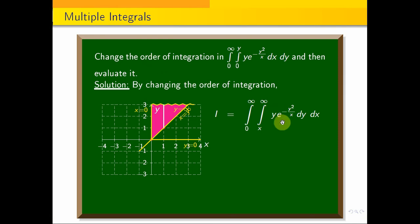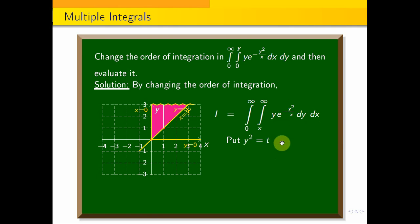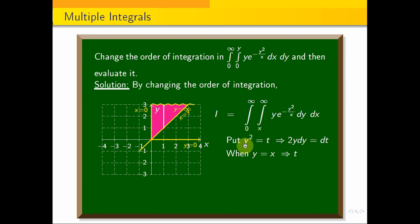Now we have changed the order. Now we can evaluate. We integrate with respect to y. We have e power minus y square by x. We use the substitution method. Put y square is equal to t. Differentiate: 2y dy is equal to dt. For limits, when y is equal to x, t is equal to x square.